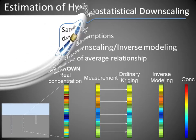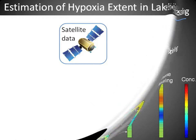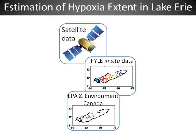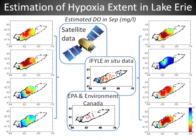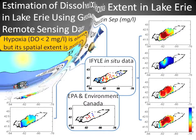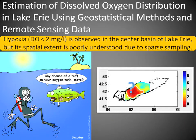In my second project, I have been working on combining satellite data with sparse in situ measurements to estimate the extent of hypoxia in large water bodies. Hypoxia has been observed in the central basin of Lake Erie in recent years. However, its spatial extent is poorly understood due to sparse sampling.